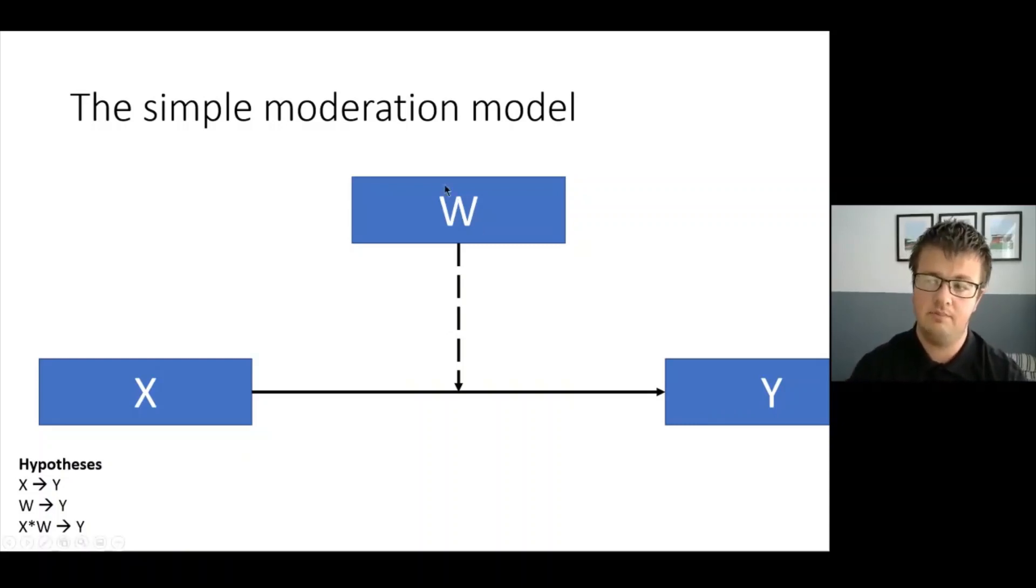When we have moderation, we have this third variable which we're going to call W. The labeling of this, really all I've done is follow what is in process. So you can call this anything you want, but W is what we're going to call it.